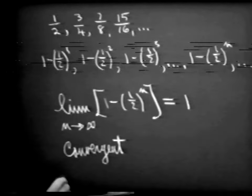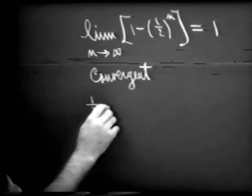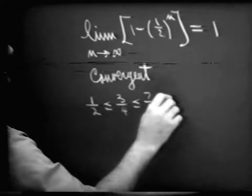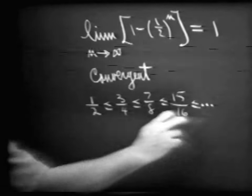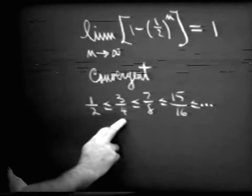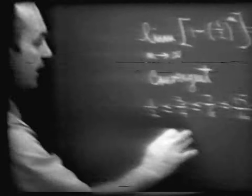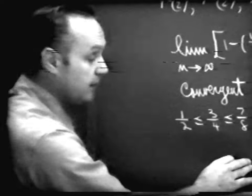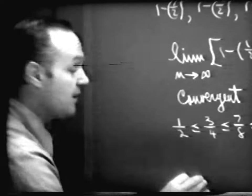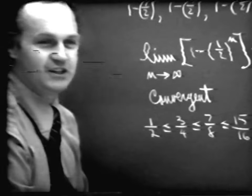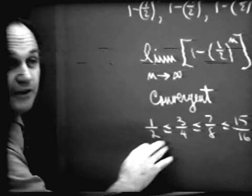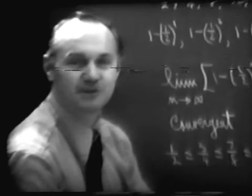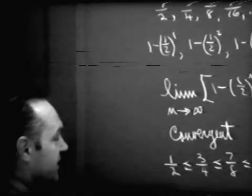Let's continue to look at this sequence. Notice that one-half is certainly less than or equal to three-fourths, which is less than or equal to seven-eighths, which is less than or equal to fifteen-sixteenths, and so on — in which each term is less than or equal to the next term. When we have a sequence of this pattern, where each term is less than or equal to the next, we call it a non-decreasing sequence.